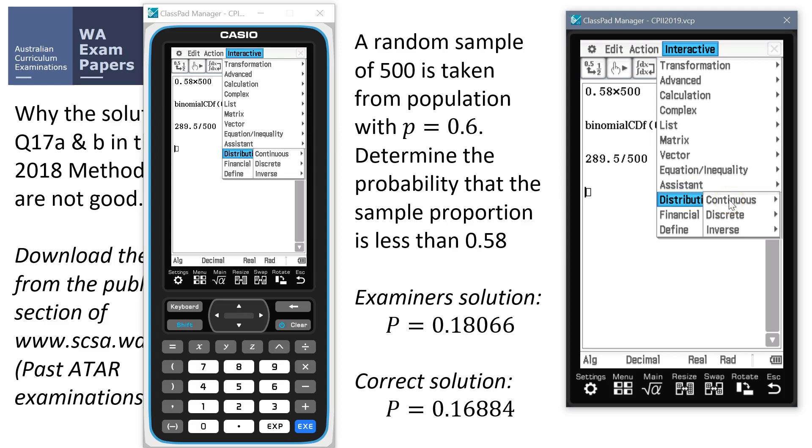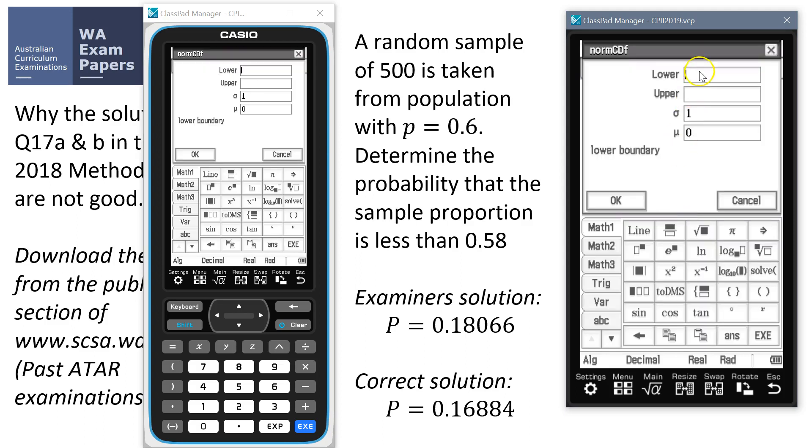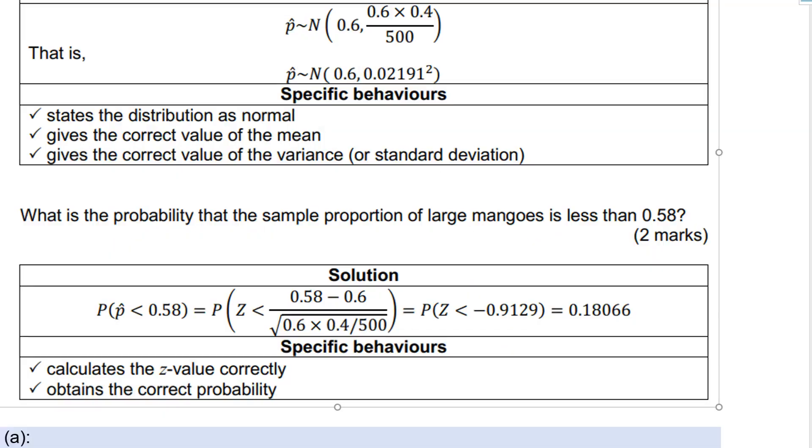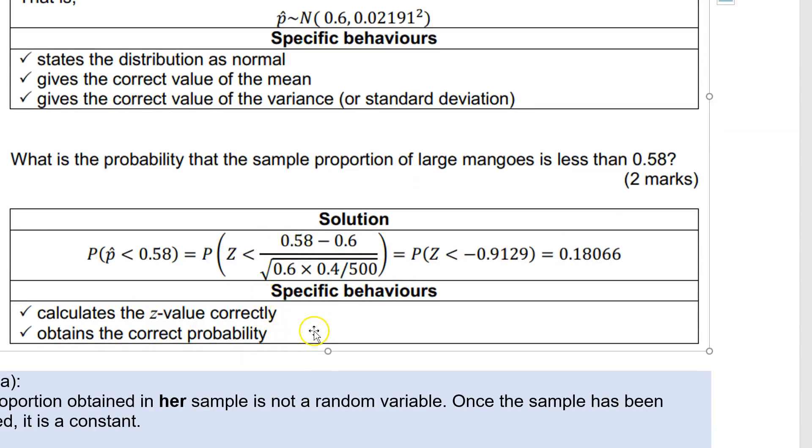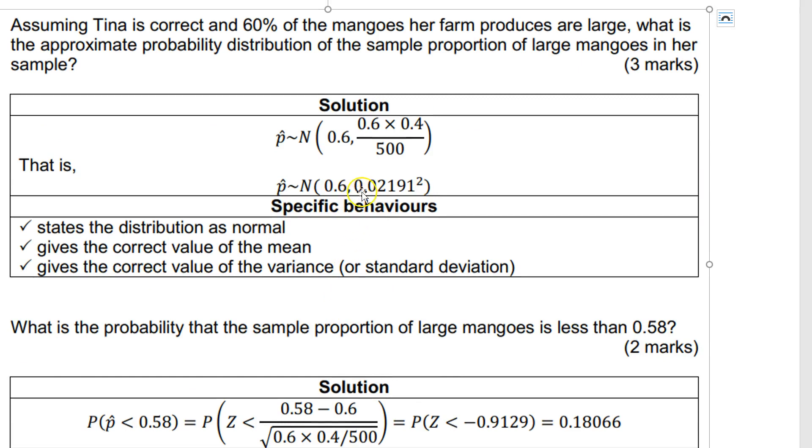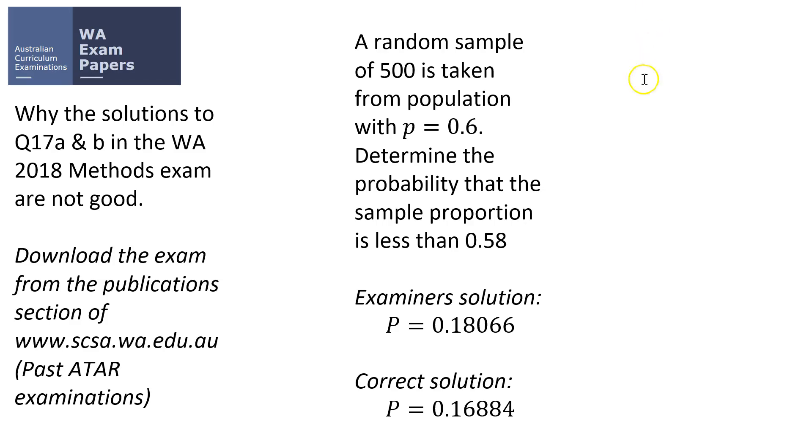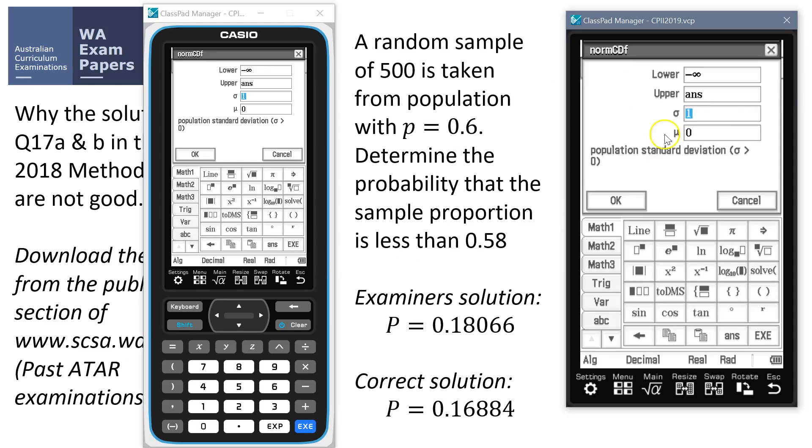So continuous norm CDF that we want the lower would be negative infinity. The upper is on the line above. So that'll be answer. The standard deviation. Oh, I've forgotten all these things. Let me just go and grab the standard deviation. Where's our other question gone? So the standard deviation here was 0.021 squared. 0.02191. And the mean was 0.6. And hopefully those numbers. And it's kind of close, isn't it?